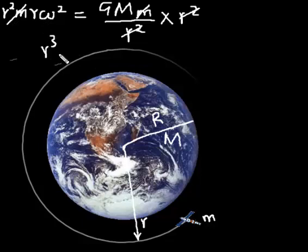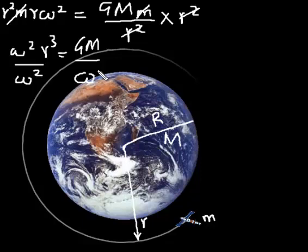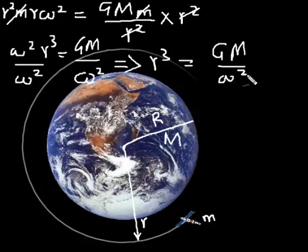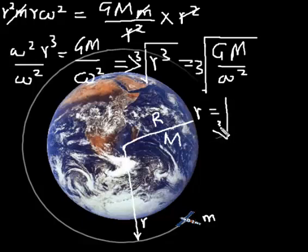So r cubed omega squared equals GM. Next, we divide by omega squared, because we want to make r the subject. We divide by omega squared both sides and we remain with r cubed. So r cubed is equal to GM over omega squared. And if we want to make r the subject, get the cube root both sides of the equation. r is the cube root of GM over omega squared.